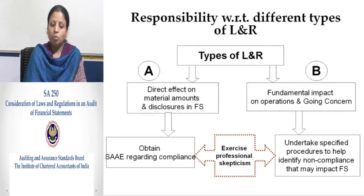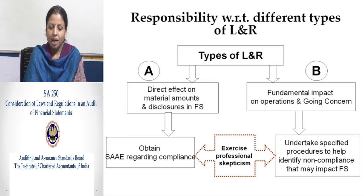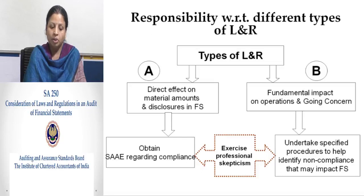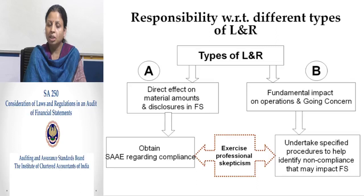There are two types of laws and regulations. First, those that have a direct impact on material amounts disclosed in the financial statement — for these, the auditor must obtain sufficient and appropriate audit evidence with regard to compliance. Second, those that could have a fundamental impact on the operation and going concern — for these, we must undertake specified procedures to help identify non-compliances that might impact the financial statement. In both circumstances, we must exercise professional judgment.